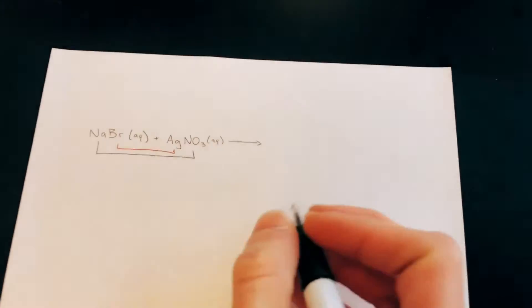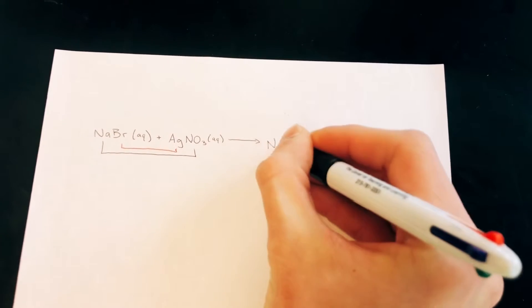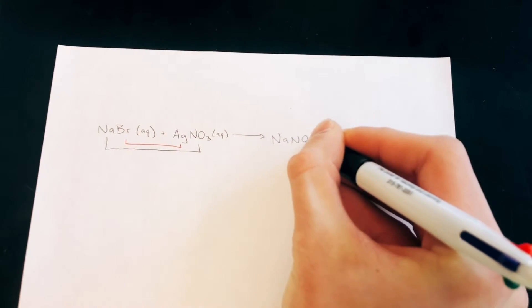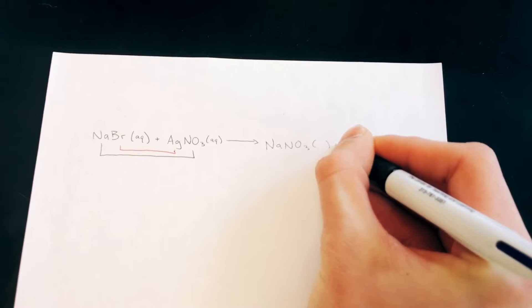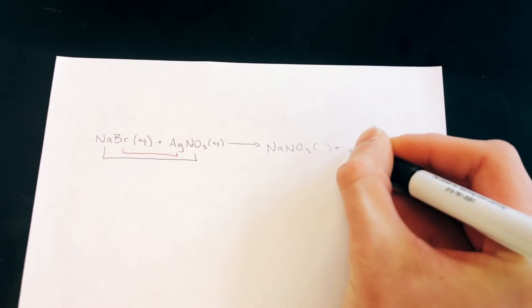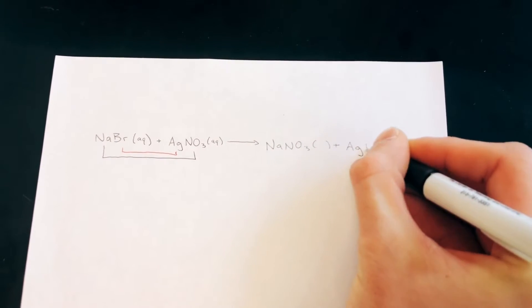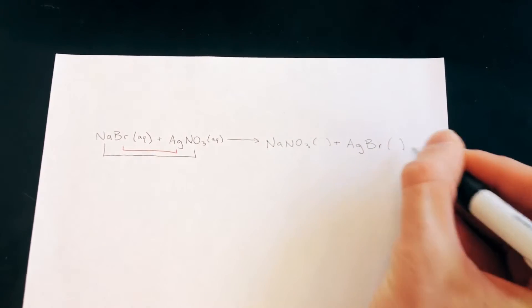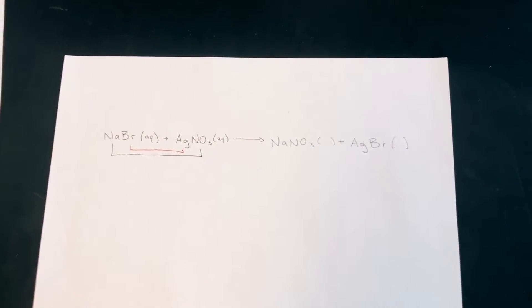You would first start out by writing out both reactants. This is an example of a double replacement reaction, so that means the cation on one compound would exchange and pair with the anion on the separate compound.